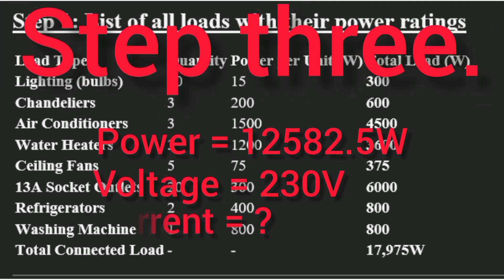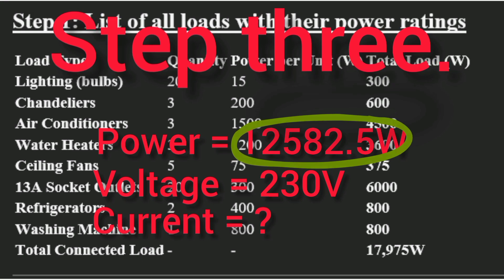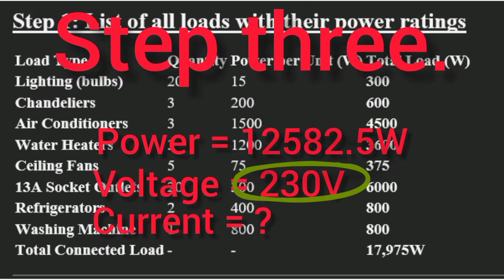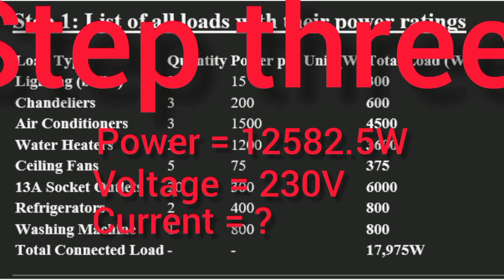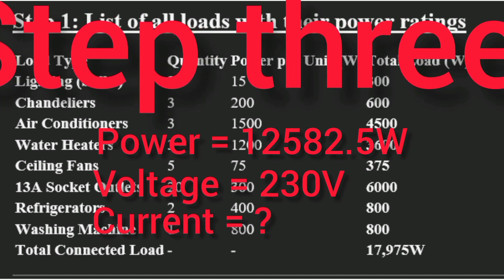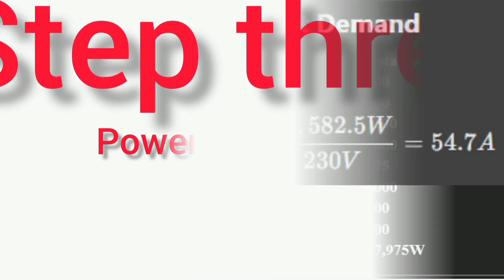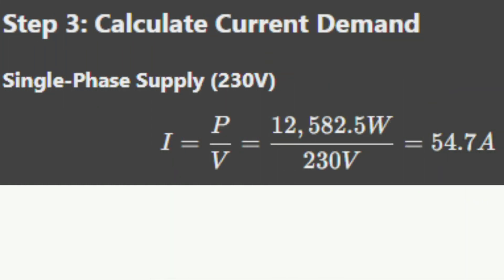To get the demand current we divide the demand power by the voltage. In some cases we also multiply the voltage by power factor, but we will address that later. So demand current = 12,582.5 watts ÷ 230 volts = 54.7 amps. If we find a cable that can safely carry 54.7 amps, we can use it as our service cable.